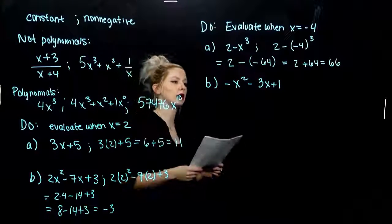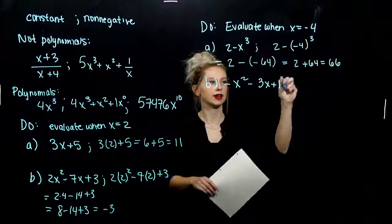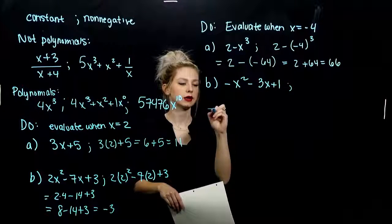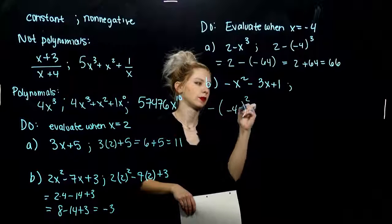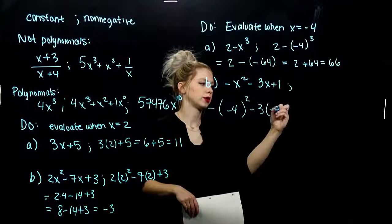And, into the second one. When I evaluate this polynomial at negative 4, what are we looking at? Wherever I see an x, I'm putting parentheses. Wherever I see an x, I'm putting parentheses.